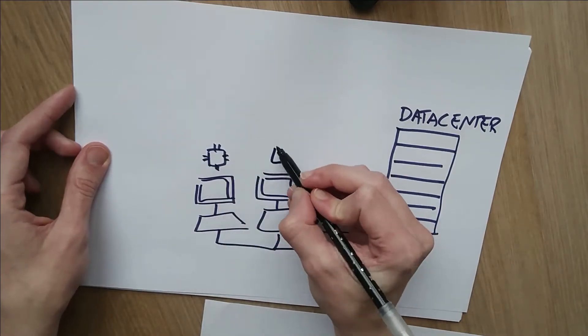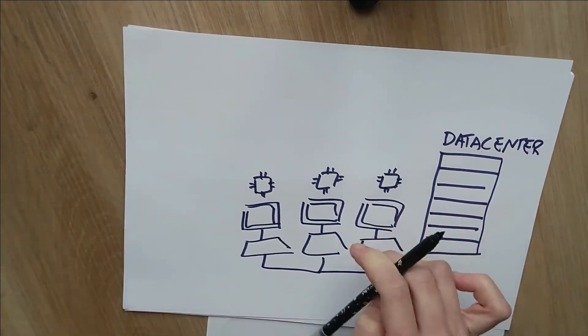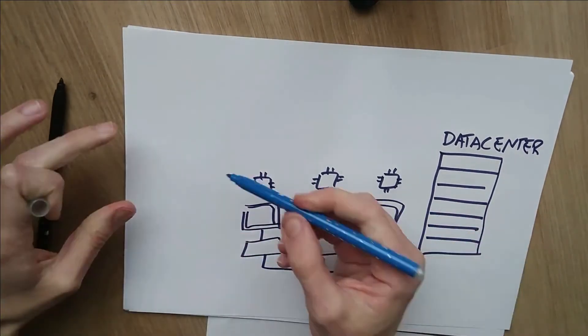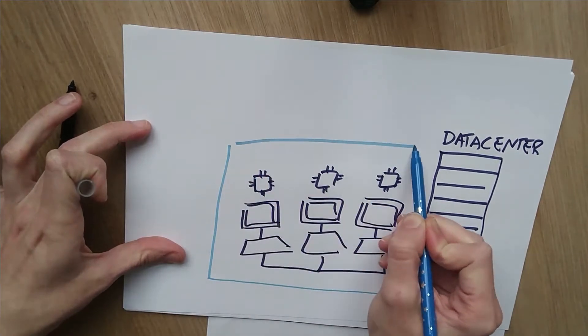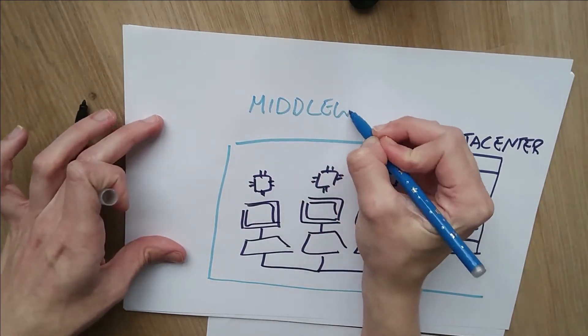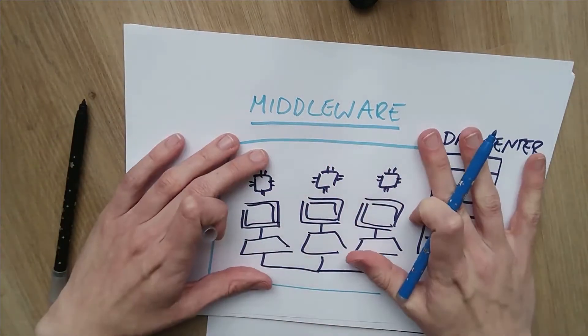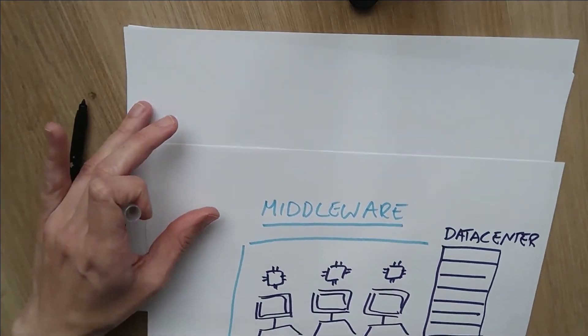They all share resources like CPUs or memory or storage and they contribute to the bigger goal of the data center and in order to manage all of this we need some additional piece of software that we usually call middleware because it's something in the middle between operating systems and the application that runs on top of it.